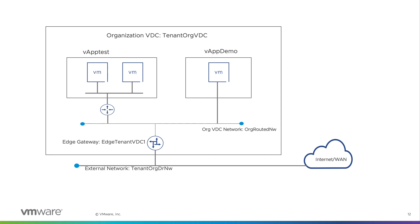In this diagram, the VMs in vAppTest are connected to each other through a routed vApp network. This network is then connected to an organization vDC routed network. The VM in vAppDemo is connected directly to the vDC network. VMs of vAppTest can communicate with VMs of vAppDemo after configuring network services such as firewall and network address translation on the vAppTest network.